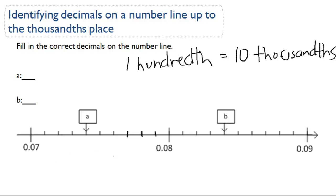Okay, so in between we have ten places in between 0.07 and 0.08, and ten places in between 0.08 and 0.09. Each of these places represents a thousandth.